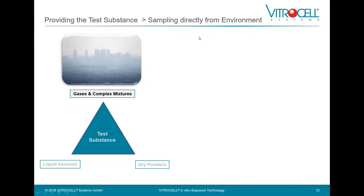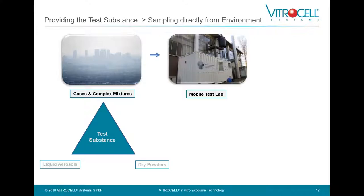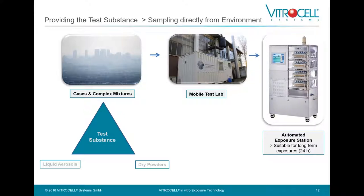Providing the test substance from the environment is a more complex task. If you want to assess the impact of such an environment, you need to bring a mobile test lab close to that environment. In the mobile test lab, you have an automated exposure station suitable for long-term exposures up to 24 hours. The doses sampled from the environment vary and are often quite low, so you really have to assess long-term effects, requiring a stable and very smooth-running system like the automated exposure station.